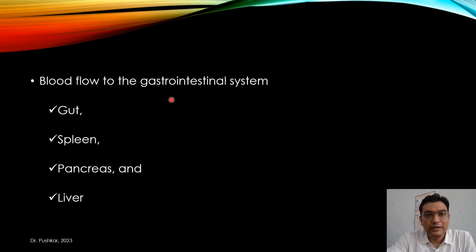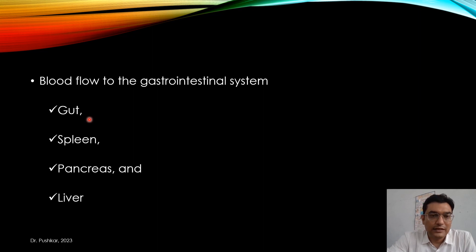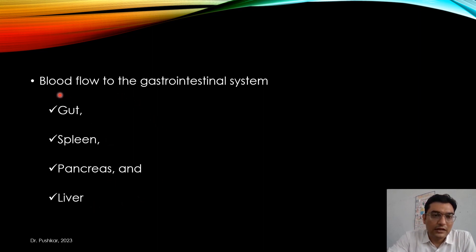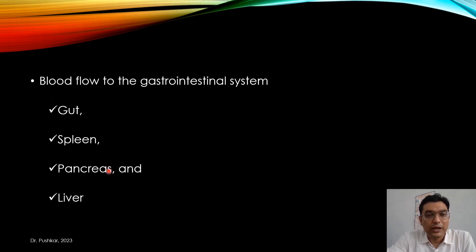In the splanchnic circulation, we have blood flow to various gastrointestinal organs, which includes the gut — stomach, small intestine, and large intestine — and blood flow to the spleen, the pancreas, and the liver. These four organs are involved in the splanchnic circulation.